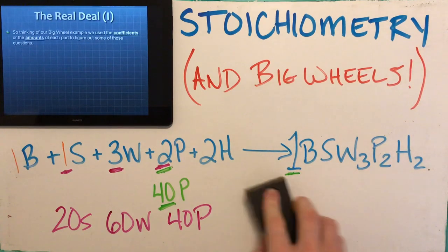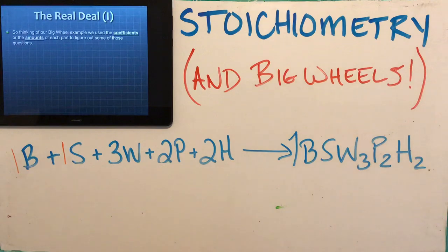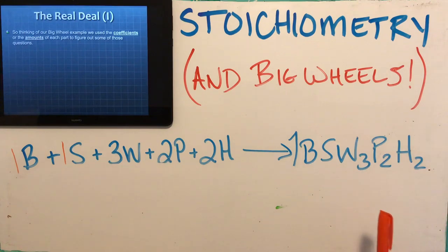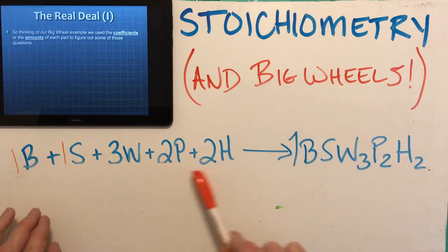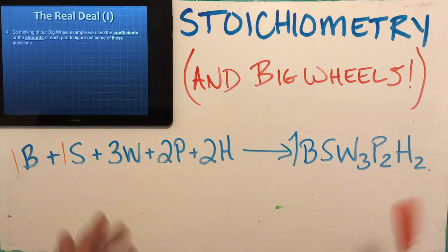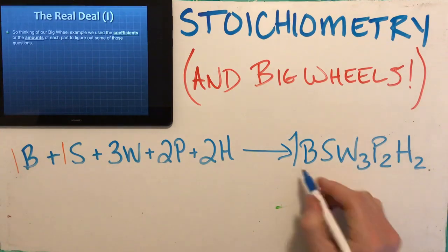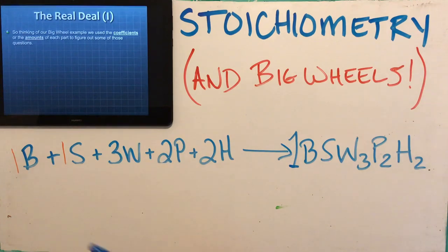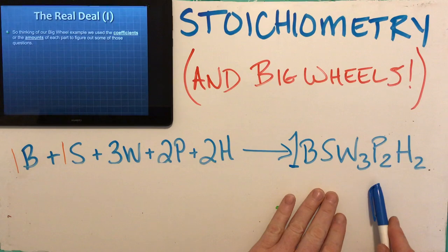If we look at a balanced chemical reaction, there are coefficients — amounts to each part. When we wanted one big wheel, we took 1, 1, 3, 2, and 2. When we wanted ten big wheels: 10, 10, 30, 20, and 20. It was easy — you were just multiplying the numbers and looking at the relationship. You were using these coefficients, relating things based on the amount required to make the product.